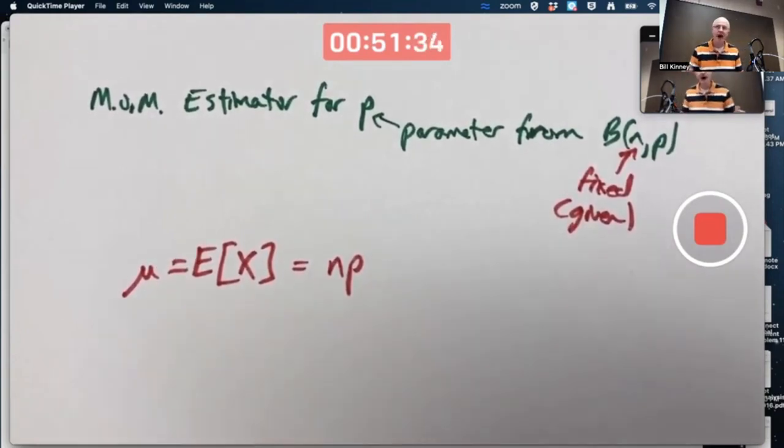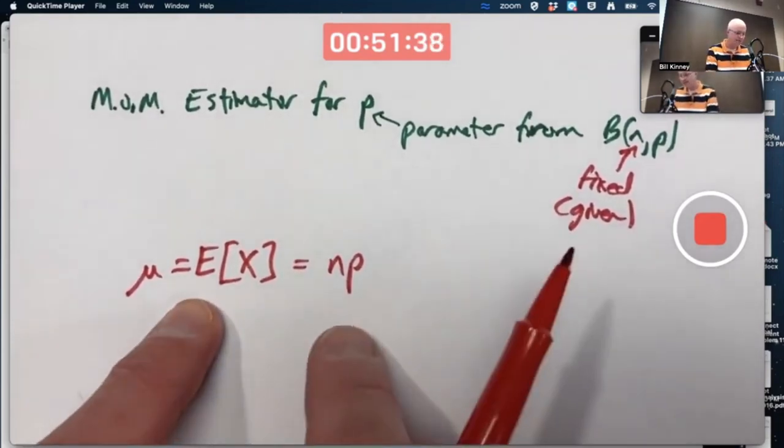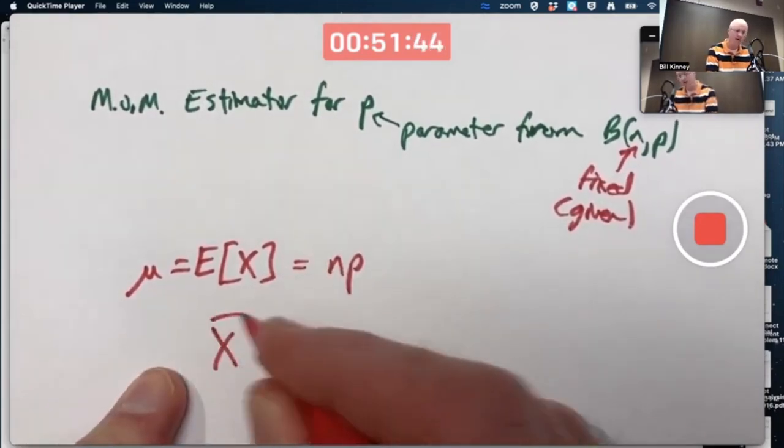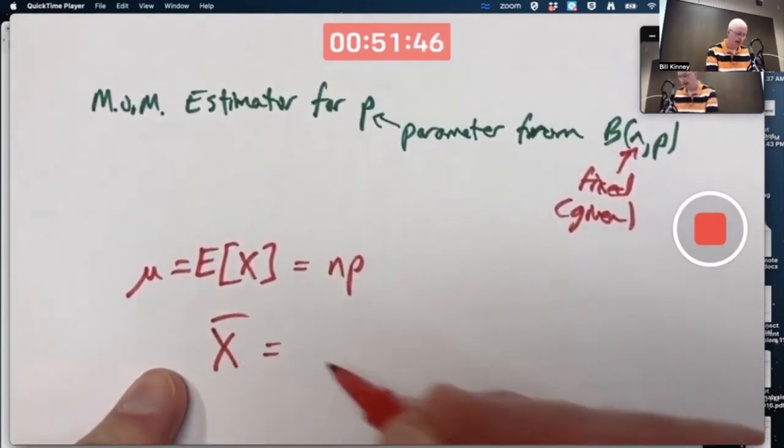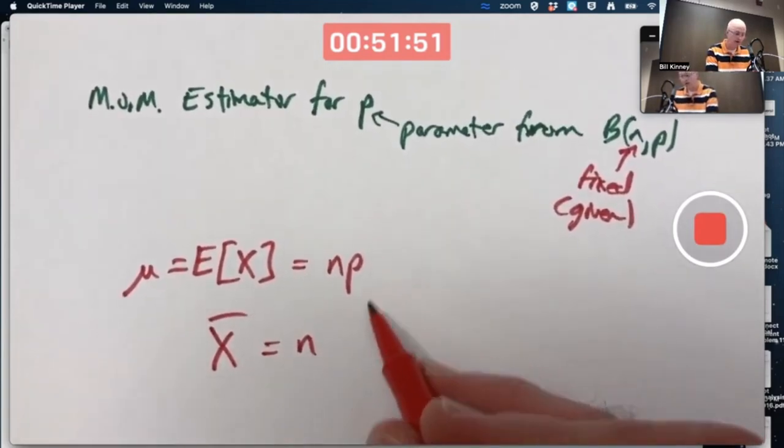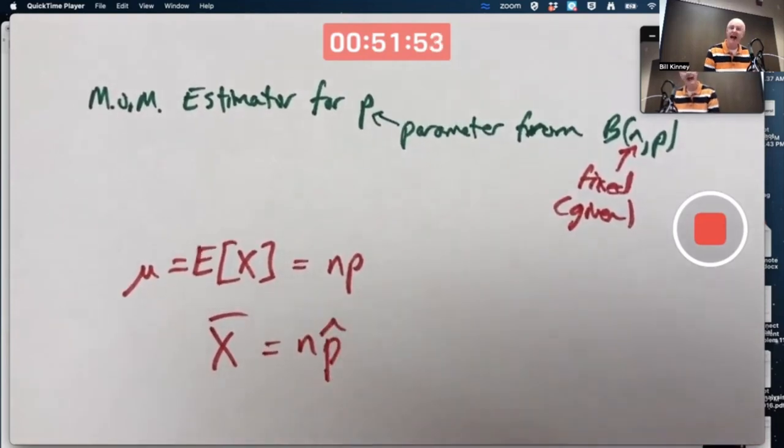The method of moments, MOM, says replace the mean, the first moment, with its natural estimator, x̄. N is fixed, so still call it N. And replace the parameter you're trying to find an estimator for with a symbol for its estimator, p̂.